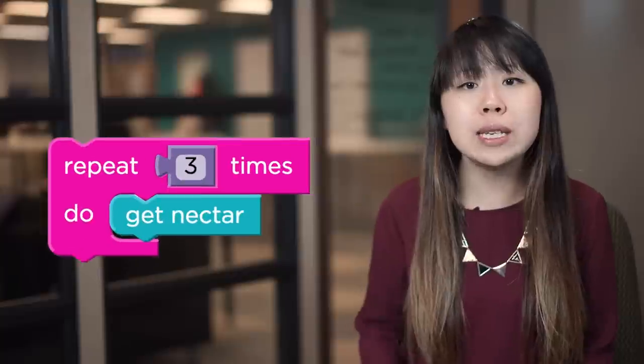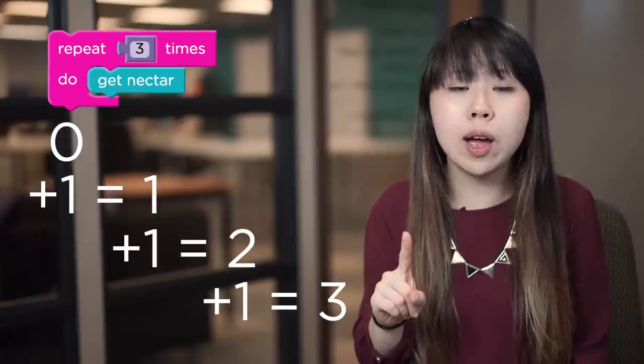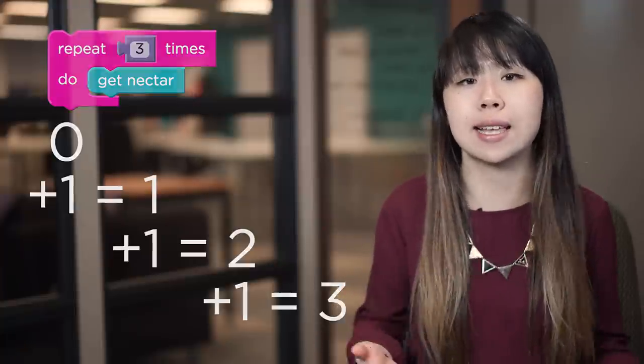So for example, a repeat three block counts from one to three by one, and every time it counts it runs the code inside the loop.